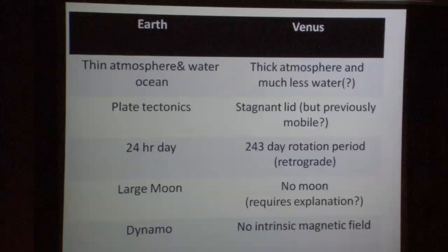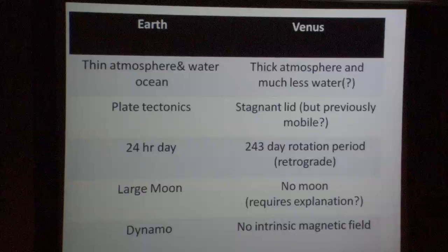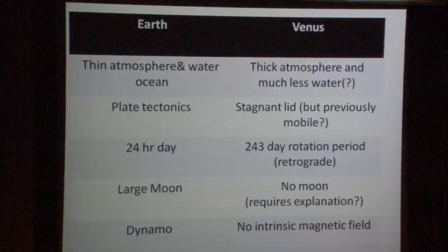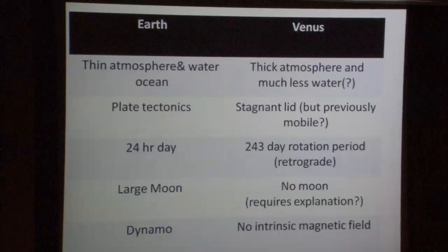Earth's rotation period has been set through the evolution of the Earth-Moon system. The Earth-Moon system has 80% of its angular momentum in the orbital motion of the Moon, only 20% left in Earth — so Earth is actually a slow rotator in the context of the total angular momentum budget. Strikingly, Venus has a very slow rotation period, and it's the smallness of this that is of interest, not just the fact that it's retrograde. Earth has a large Moon, and Venus has no Moon.